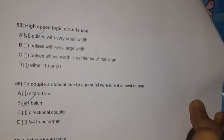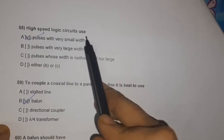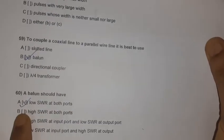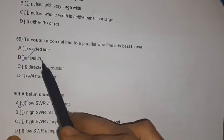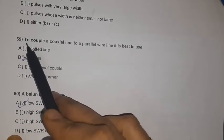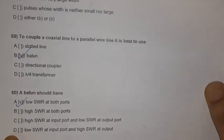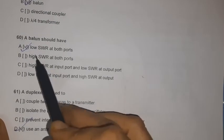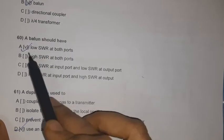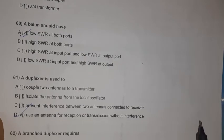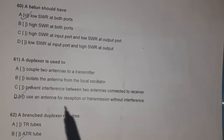Question 57: High-speed logic circuits use pulses with very small width. Question 58: To couple a coaxial line to a parallel line, it is best to use a balun (balanced-unbalanced transformer). A balun should have low SWR (standing wave ratio) at both ports.